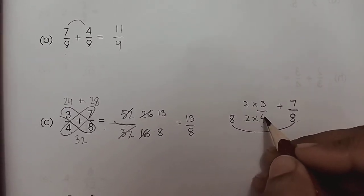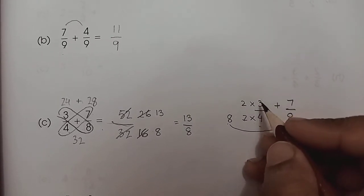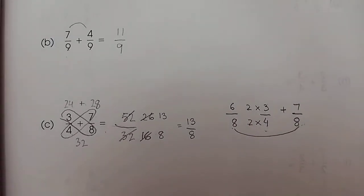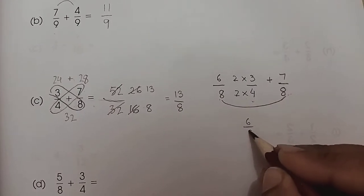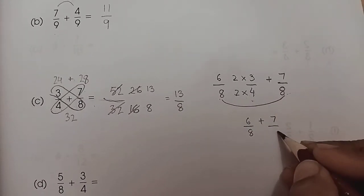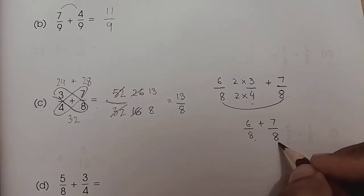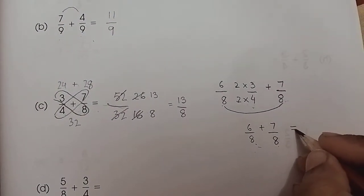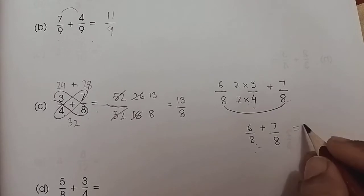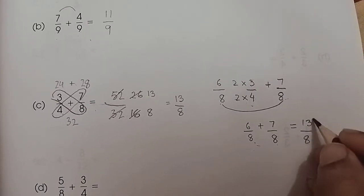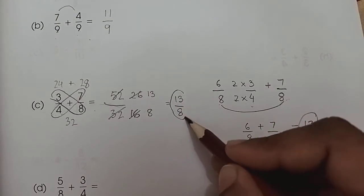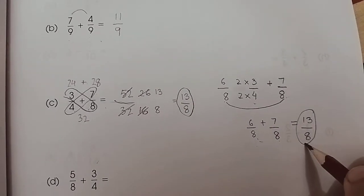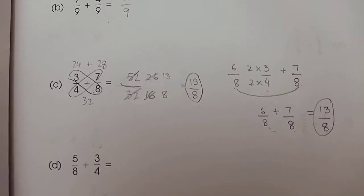We also multiply the numerator by the same number — if we multiply the denominator 4 by 2, we multiply the numerator by 2 also, giving us 6 upon 8. Now the new fraction is 6 upon 8 plus 7 upon 8. Since the denominators are now the same, we can add the numerators: 6 plus 7 gives us 13 upon 8. So the answer is the same with both methods — you can use whichever seems easier to you.